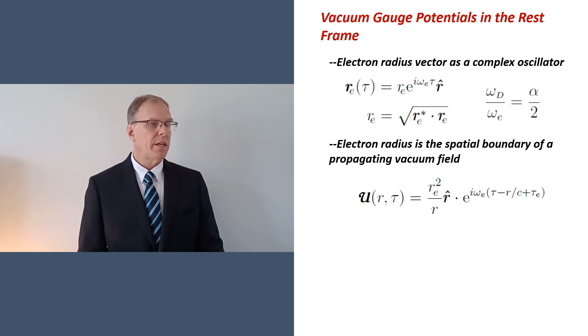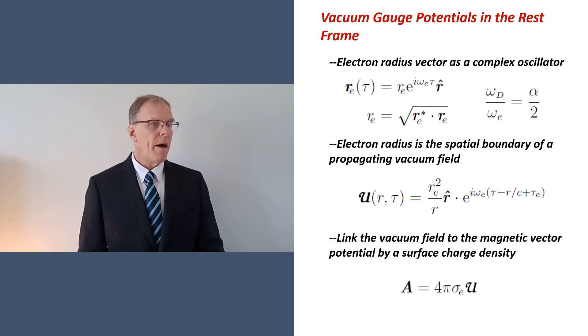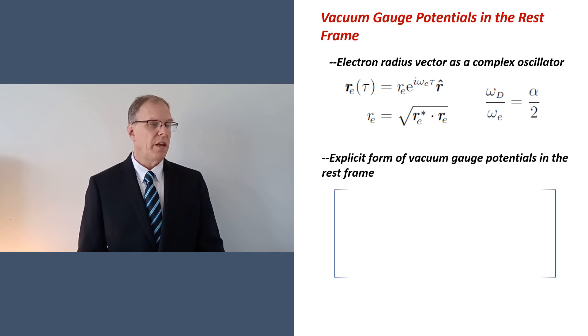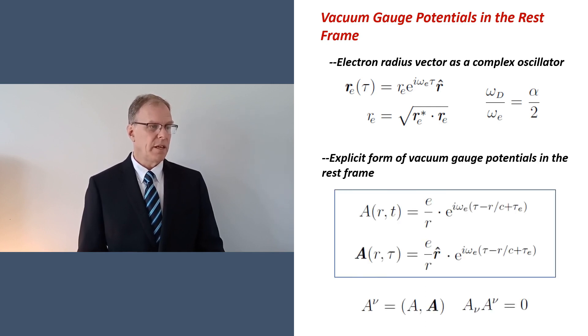A link to electromagnetism follows by multiplying the vacuum field by 4 pi times the electron's surface charge density, resulting in the magnetic vector potential A. Now we construct a set of covariant null potentials by including the magnitude of the vector potential as the time component. Together, these are rest frame vacuum gauge potentials.